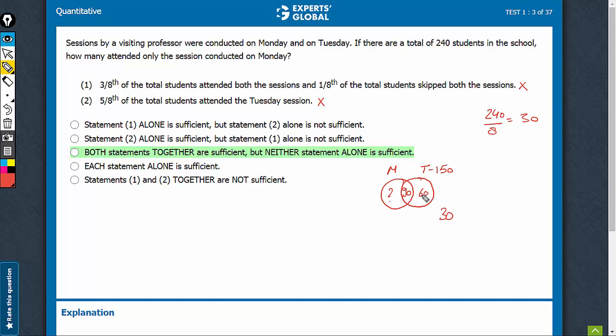Total is 240. 150, 180 and total is 240. That means this part has to be 60. We could reach the desired value 60.